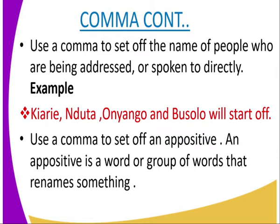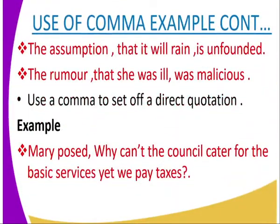A comma is used to set off the name of people being addressed or spoken to directly. For example: 'Kiarie, Duta, Onyango, and Busolo will start off.' Commas are also used to set off an appositive — a word or group of words that renames something and modifies nouns. For example: 'The assumption, that it will rain, is unfounded.' Another one: 'The rumor, that she was ill, was malicious.'